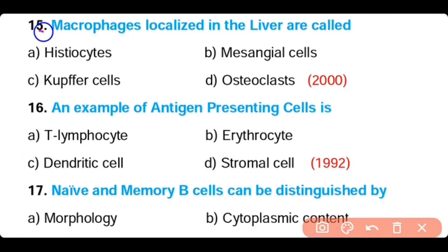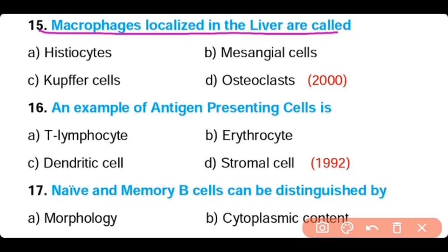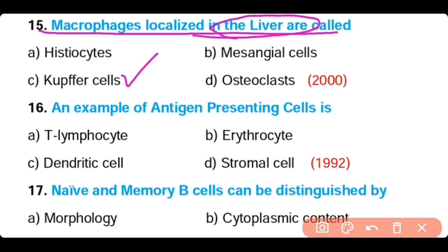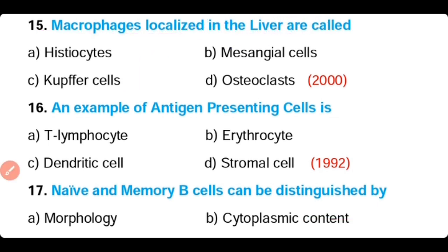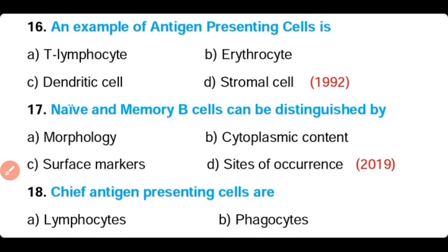Question number 15. The macrophages localized in the liver are called: histiocytes, mesangial cells, Kupffer cells, or osteoclasts. The correct answer is Option C. Kupffer cells are the macrophages that are localized in the liver.